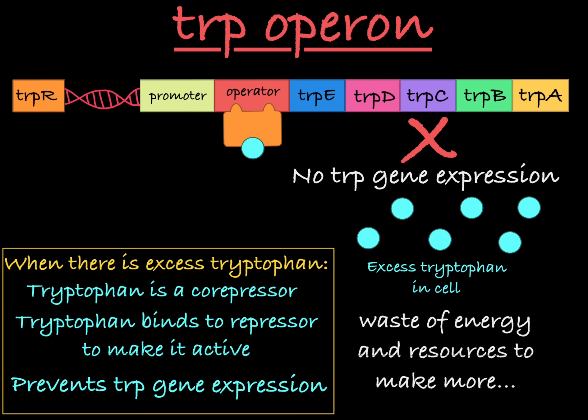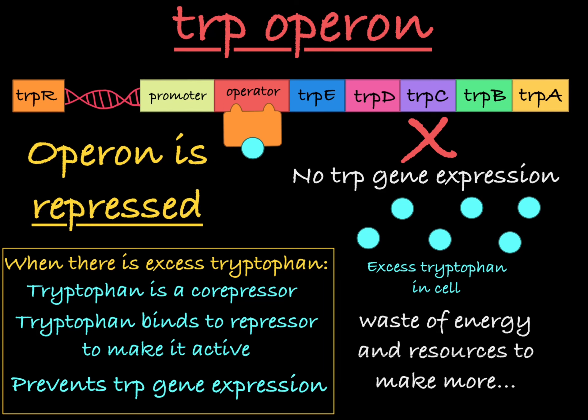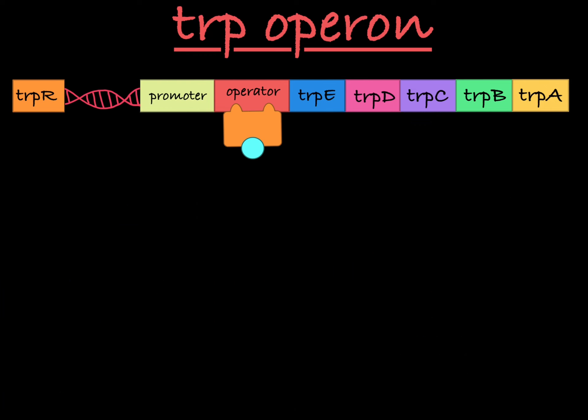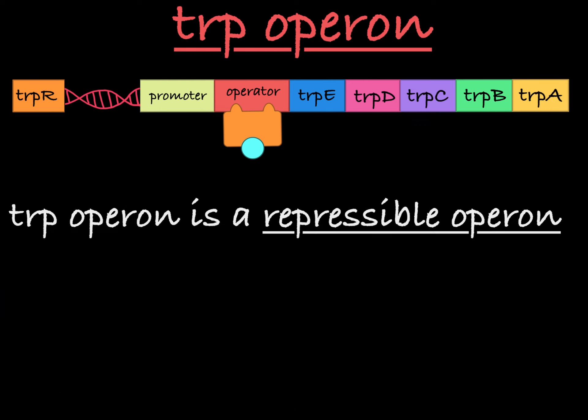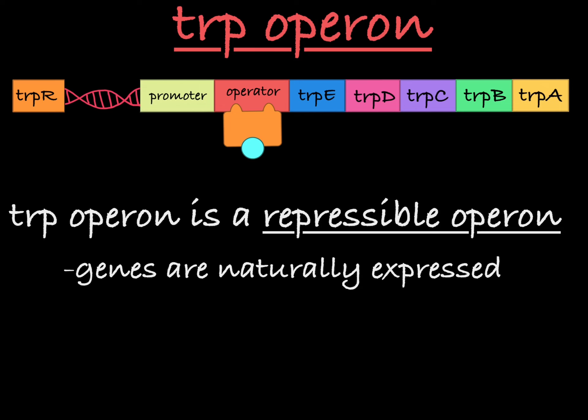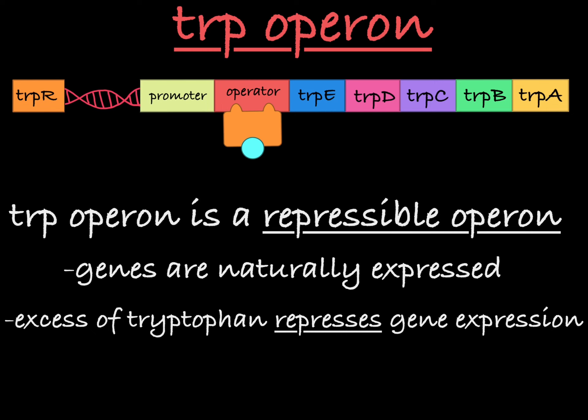In this state, the operon is said to be repressed. The trp operon is a repressible operon because its genes are naturally expressed, and you must have an excess of tryptophan present in the environment for the genes to be repressed.